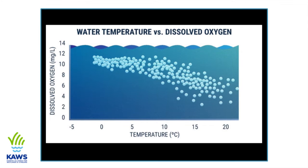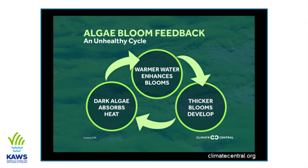Warmer water holds less dissolved oxygen, which can lead to fish kills. It can even act as a trigger for fish to begin preparing for things like reproduction and migration, which is the only way that fish have to ensure the survival of their species. Finally, warmer water creates the perfect microclimate for — you guessed it — more harmful algae blooms.